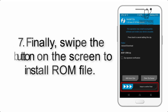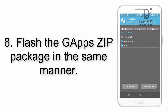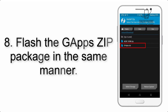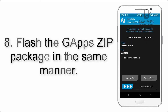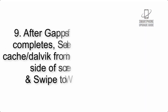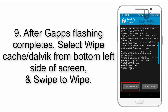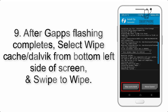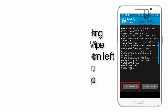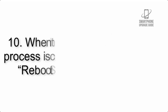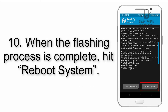Step 7: Swipe the button on the screen to install the ROM file. Step 8: Flash the GApps zip package in the same manner. Step 9: After GApps flashing completes, select Wipe Cache and Dalvik from the bottom left side of the screen and swipe to wipe.